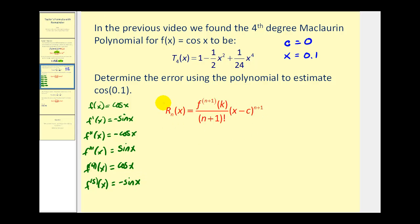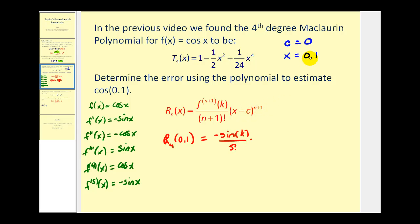Using this formula, r sub four of 0.1 equals the fifth derivative evaluated at k, which is negative sine k, divided by five factorial, times x minus c to the fifth power. Since x is 0.1 and c is zero, that gives us 0.1 to the fifth power. The problem is we don't know what negative sine of k would be.